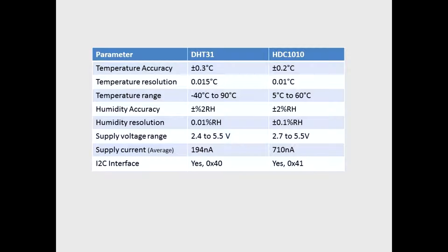DHT31 is plus or minus 0.3, 0.2 for the HDC1010. Resolution or temperature resolution is about the same. Much greater temperature range on the DHT31 for reading purposes.